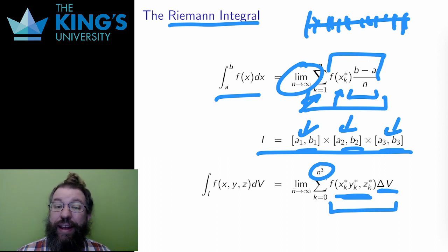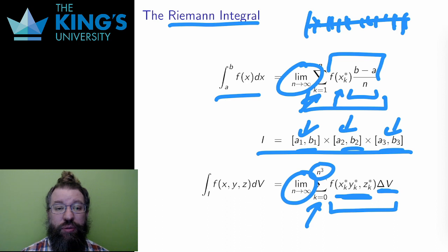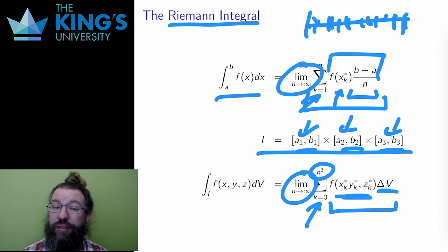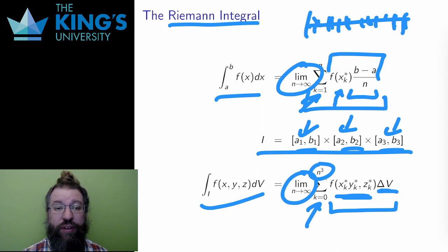Then I add up all these pieces — all n cubed of them — to get an approximation. And finally, I take the limit as the number of pieces goes to infinity. If the limit exists, then the function is integrable over this set, over this interval.